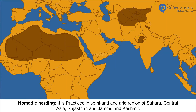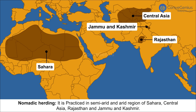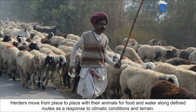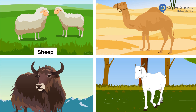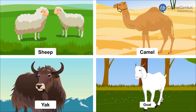Nomadic Herding is practiced in semi-arid and arid regions of Sahara, Central Asia, Rajasthan and Jammu and Kashmir. Herders move from place to place with their animals for food and water along defined routes, as a response to climatic conditions and terrain. Sheep, camel, yak and goats are reared for milk, meat, wool and other produce.